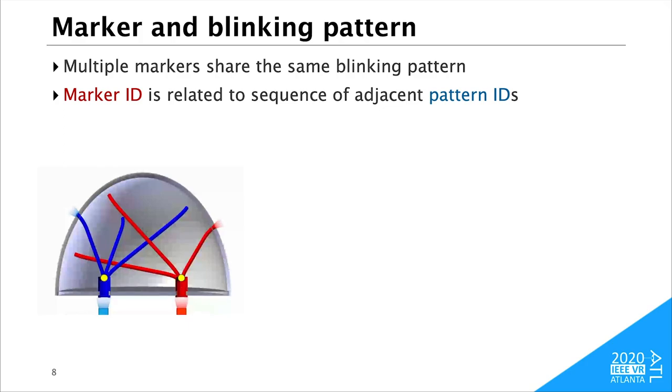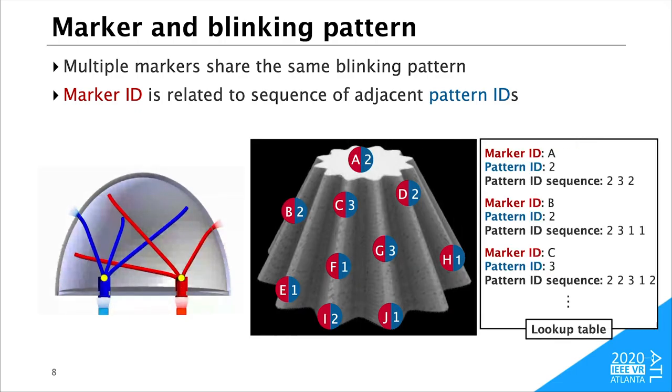To reduce the number of LEDs, multiple markers are connected to the same LED, so they share the same blinking pattern. We assign two types of IDs to each marker. The first is marker ID, which is unique to each marker, shown as red. The second is pattern ID, which is same for markers connected to the same LED, shown as blue.